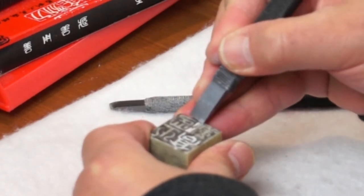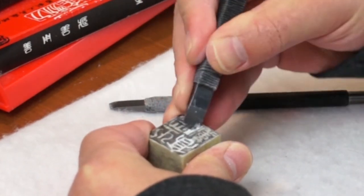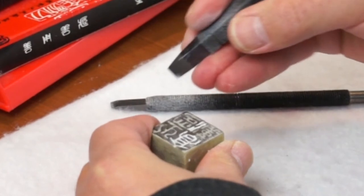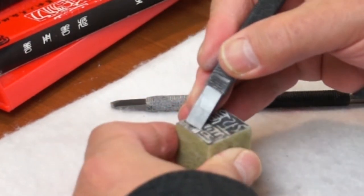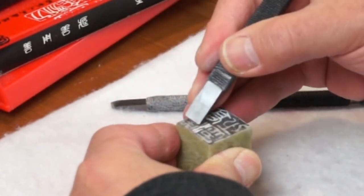The strokes are not very even. It's more organic shape. It depends on the pressure of the knife. It's like calligraphy writing. It's a sense of stroke.